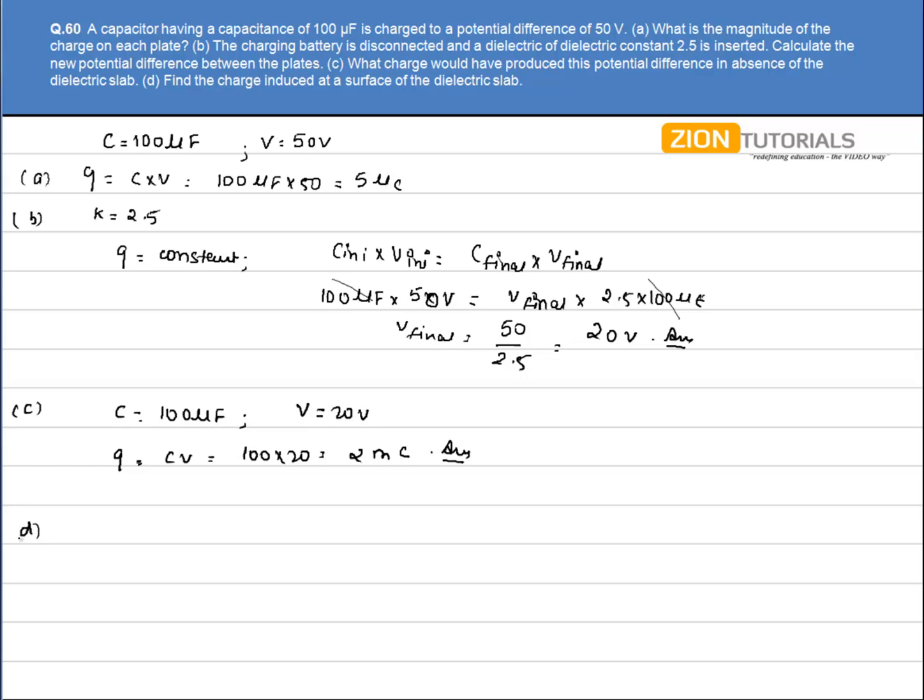In part D, we have to calculate the charge induced at the surface of the dielectric slab. This can be calculated by the dielectric formula: Q induced equals Q₀ times (1 minus 1/K).